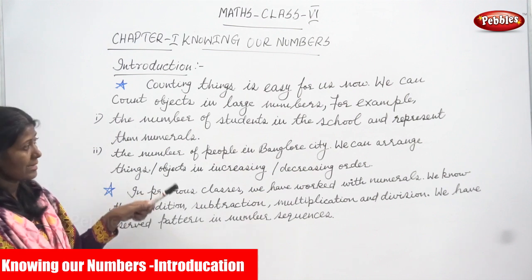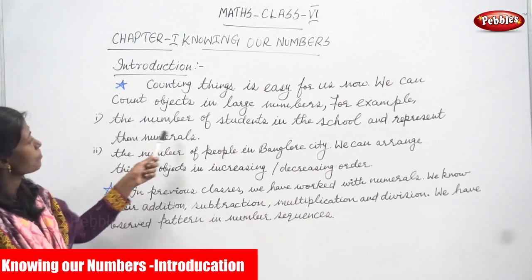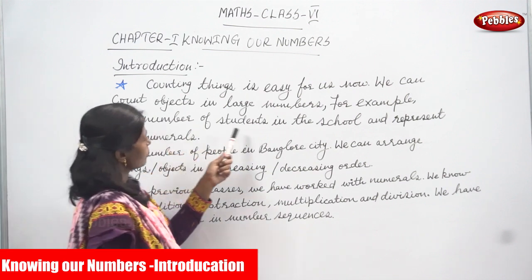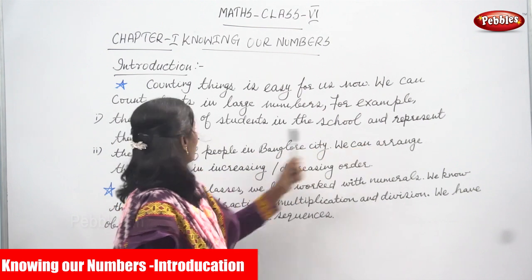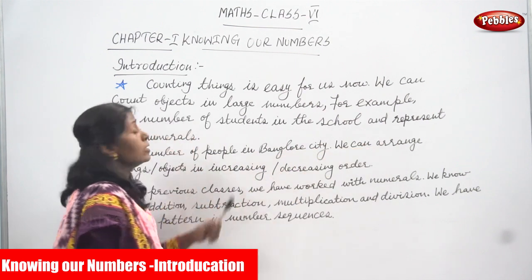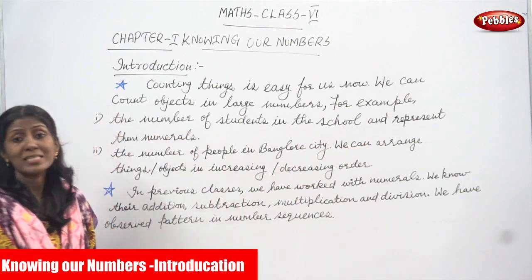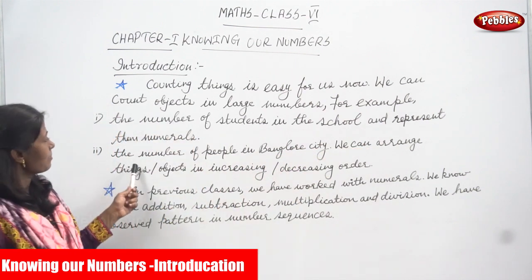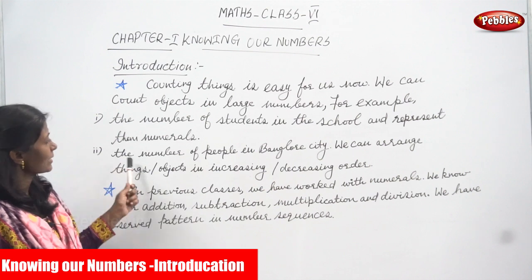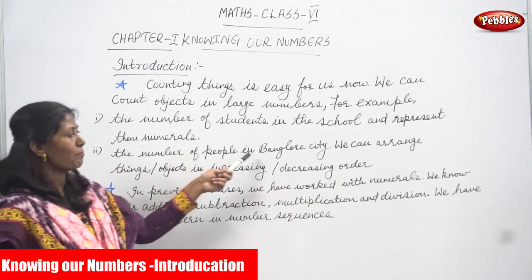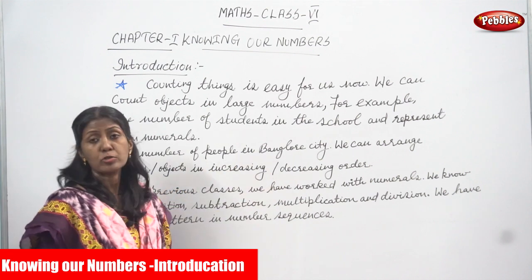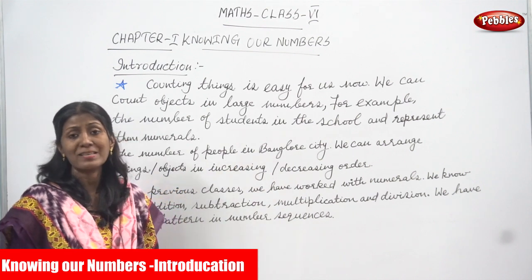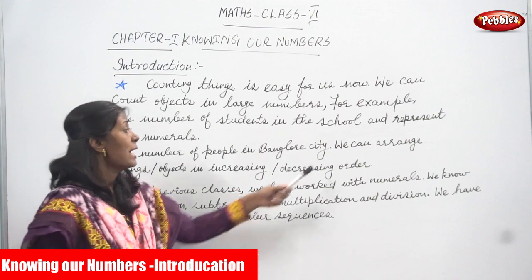Our first example is the number of students in the school, and we represent them in numerals. Numerals means nothing but numbers. The second example is the number of people in Bangalore city — it is also represented in numerals, that means numbers.